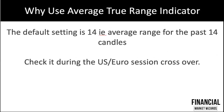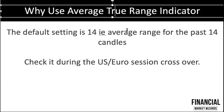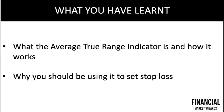The default ATR setting is 14, representing the average range for the past 14 candles. An important tip: check this indicator during the US/Euro session crossover only. If you check at the start of the day, the current candle is still very small and will skew your ATR reading since the indicator includes the current candle. By the crossover, the Asia and Euro sessions have already traded, and volatility is at its maximum — making the ATR reading much more reliable.